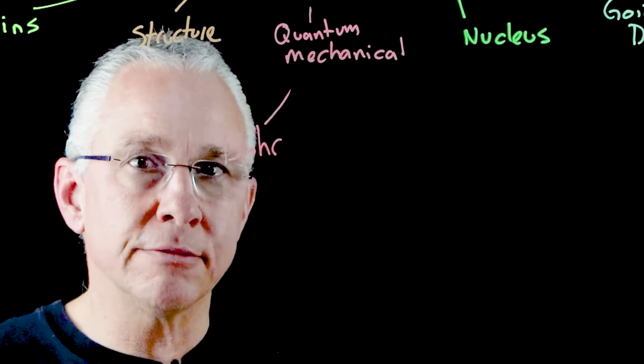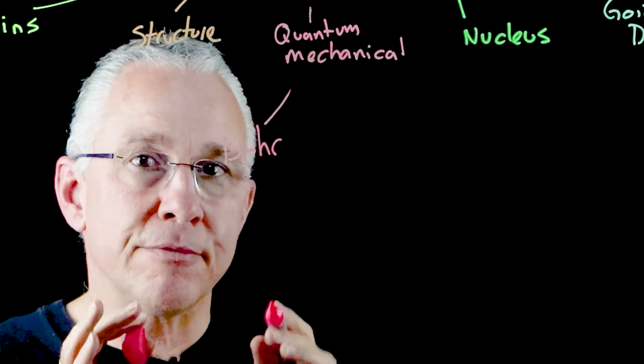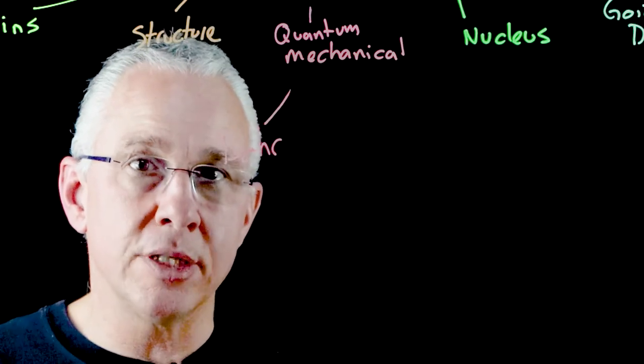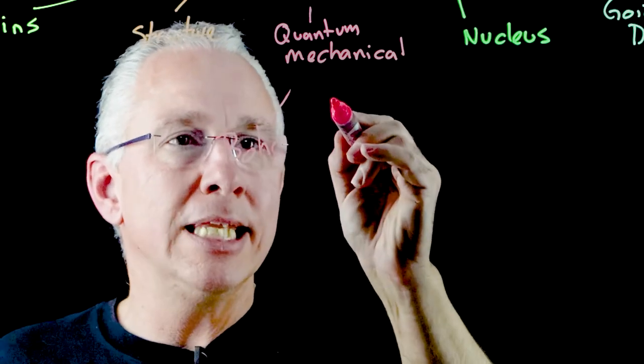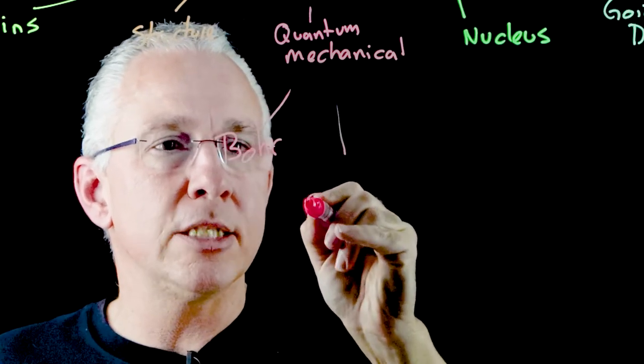But the model itself has its limitations. Apart from the fact that it could only explain hydrogen, it did not explain why electrons exist in discrete orbits. That leads us to the next scientist and that's Louis de Broglie.